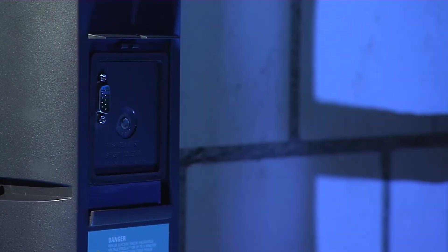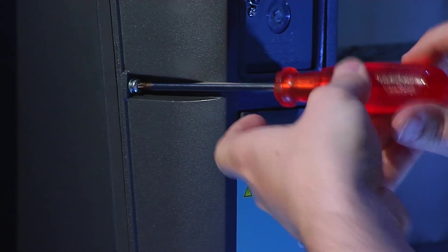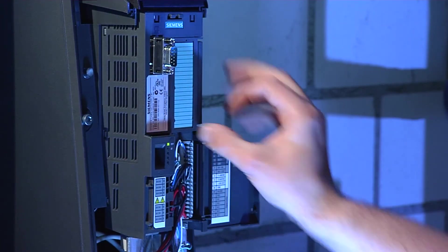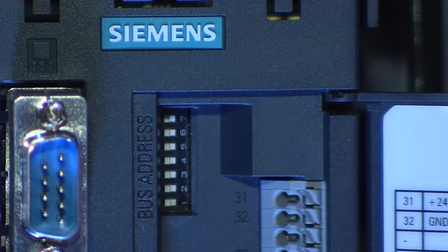First, make sure that all DIP switches for the fieldbus address are in the OFF position. The Modbus address will be controlled by the control unit only if all DIP switches are in the same position.